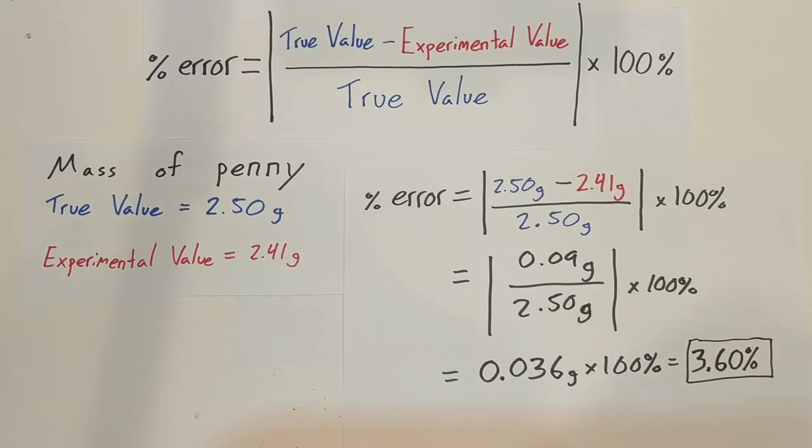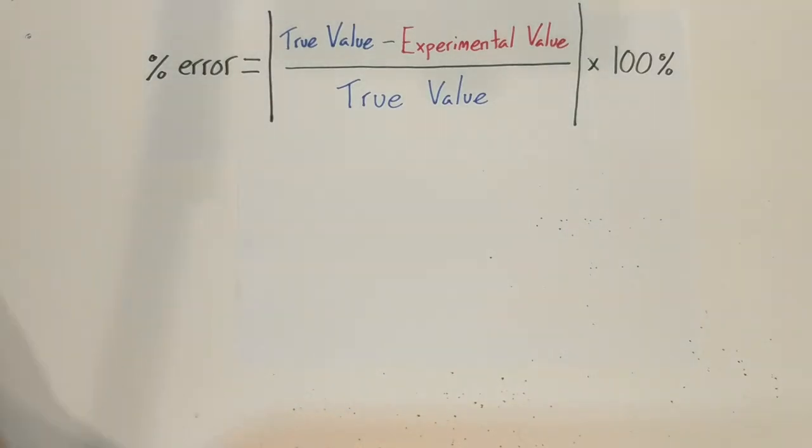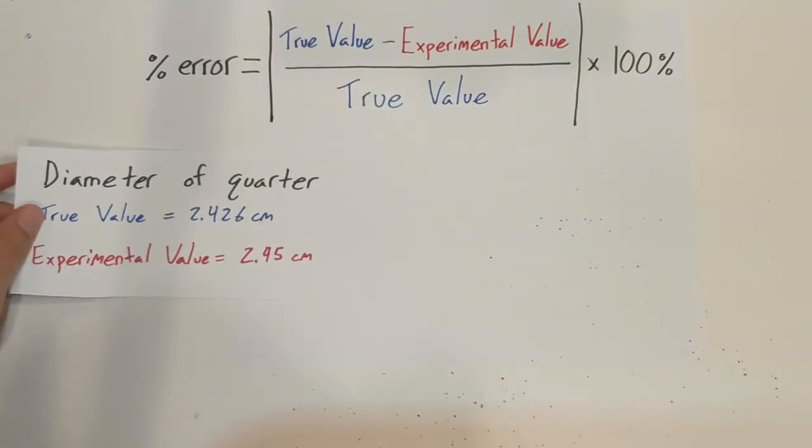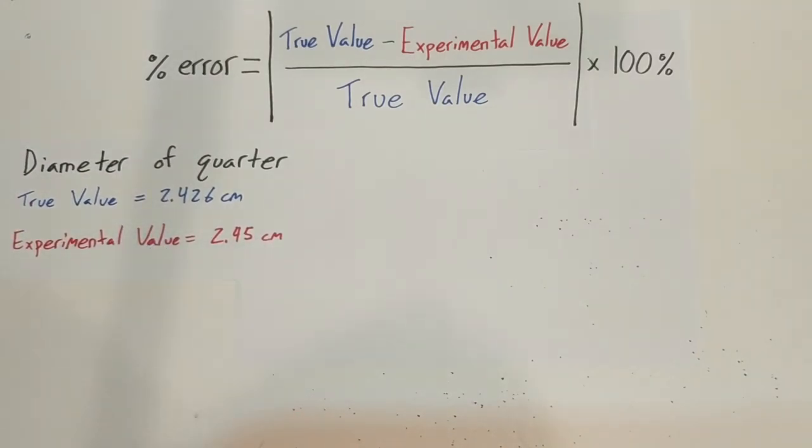All right, and I got one more. Again, I recommend trying to solve this on your own, and then you can just skip through the video to check to see your answer. But if you're still having trouble, you can follow along. So this time, I just tried to use a ruler to measure the diameter of a quarter, or measure the distance across a quarter.